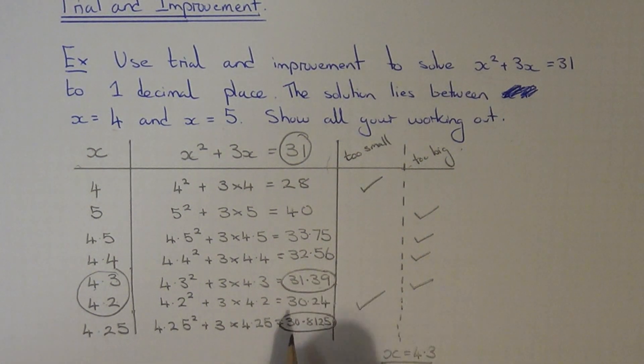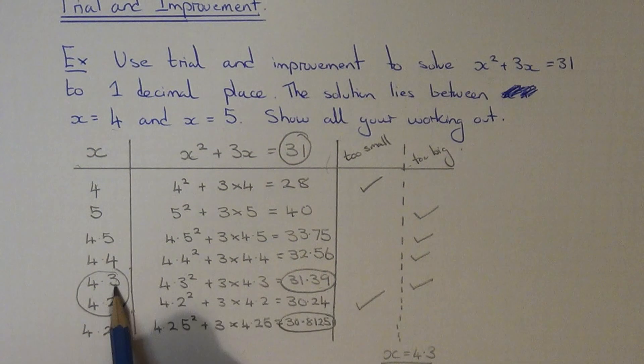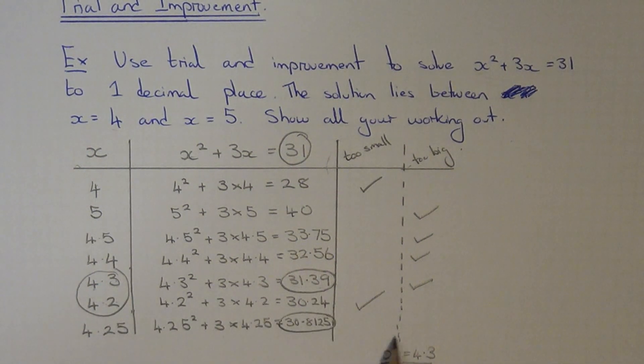It doesn't lie between 30.8125 and 30.24. So therefore that's why the 4.3 was the closest.